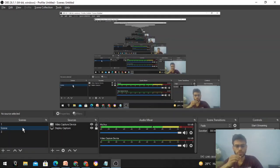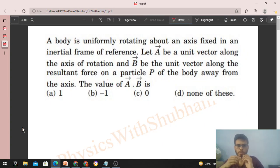Okay, hi everyone. So today let's discuss this interesting problem. It says a body is uniformly rotating about an axis fixed in an inertial frame of reference. Let A be a unit vector along the axis of rotation.